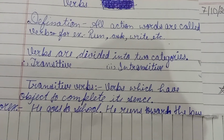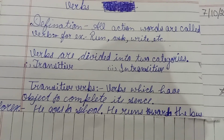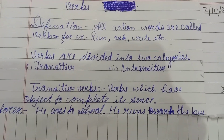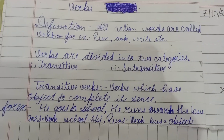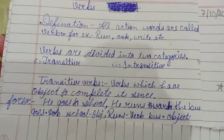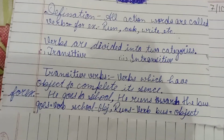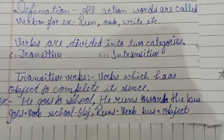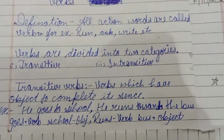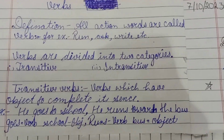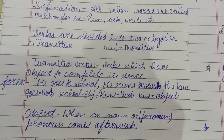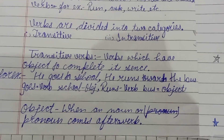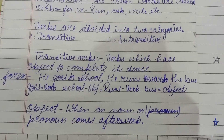Transitive verbs are verbs which have an object to complete their sense. For example, 'he goes to school,' 'he runs to school.' When a noun or pronoun comes after a verb — jab ek noun ya pronoun verb ke baad aata hai — use object kehte hain.